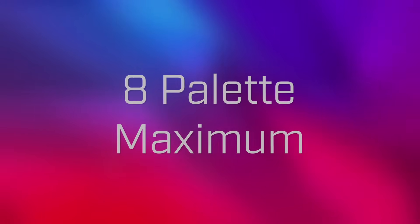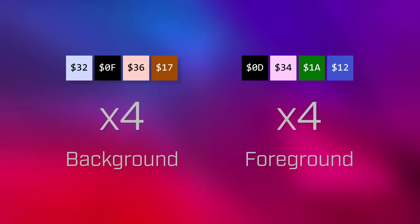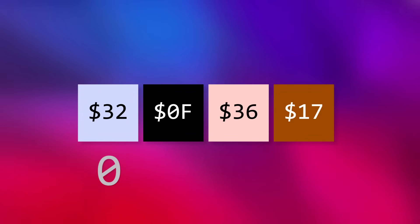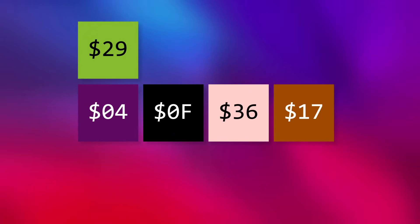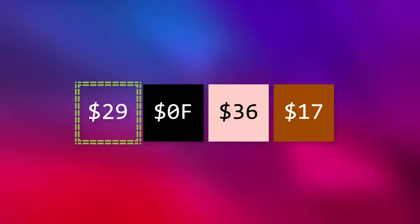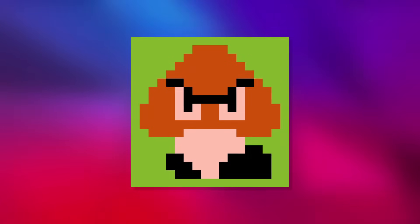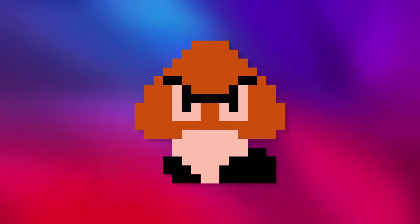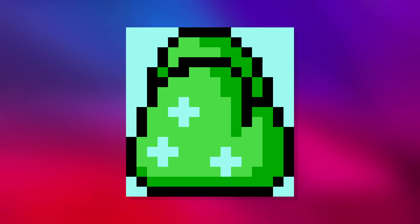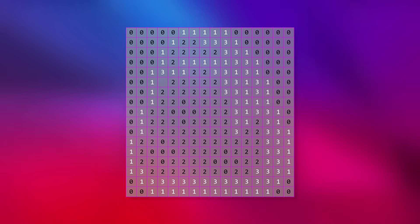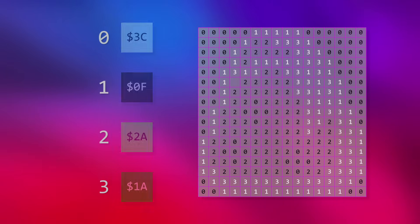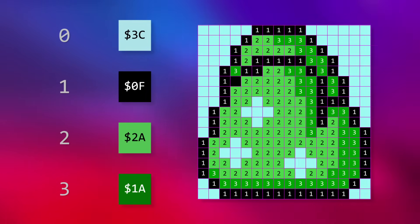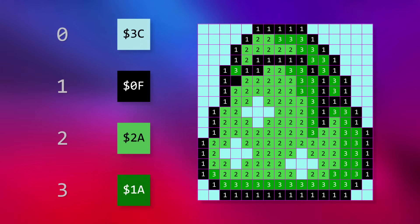The NES can store up to eight palettes at a time — four for the background and four for the foreground — and each palette contains four colors. The first color for each palette, at index zero, isn't really a color at all. No matter what value the programmer sets, it'll always be interpreted by the PPU as the transparency color. When the NES renders a tile image and encounters a value of zero for a given pixel, it'll interpret that pixel as transparent and just not render anything at all.